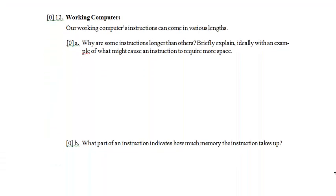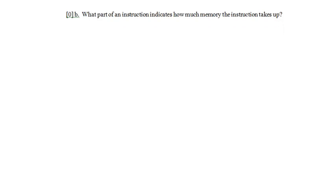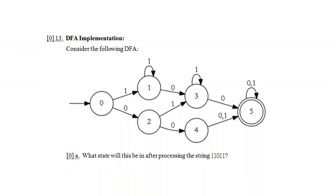There's one tiny prompt at the top of the page - reminds me of a physics test where the question was just 'why is the sky blue?' The working computer question asks: do working computer instructions come in various lengths, and why are some instructions longer than others? I kind of know the answer to that already. What part of an instruction indicates how much memory the instruction takes up? I know that one too. I'm definitely coming back to this problem; it might take a little while to write up answers but I'm not too worried. There's no part C, so I'll mark this as definitely come back to.